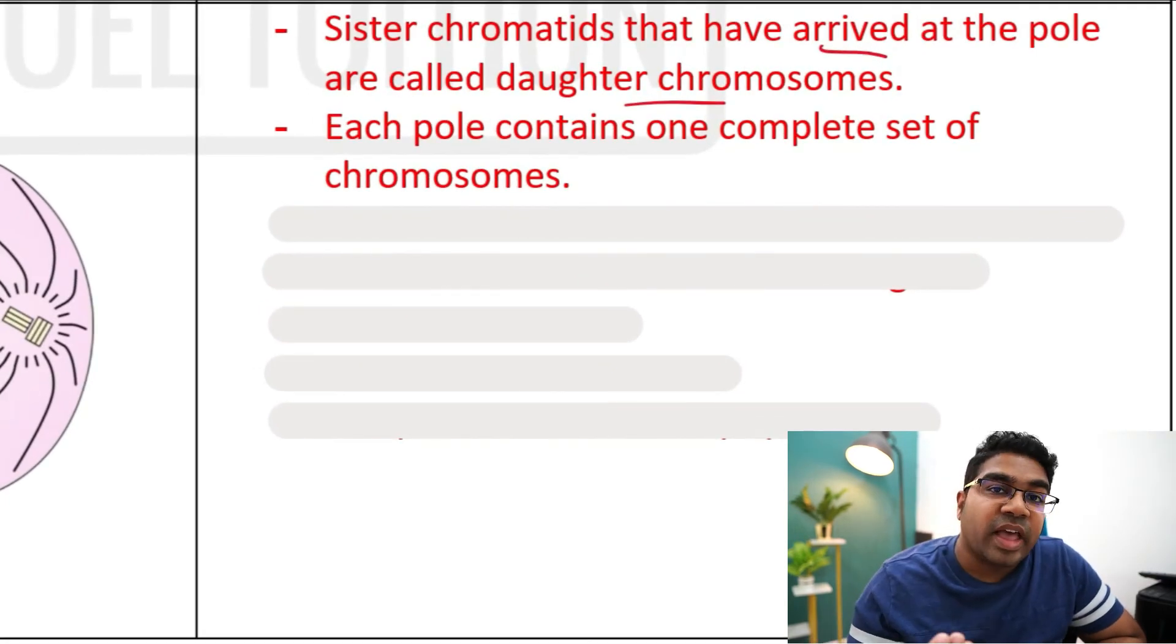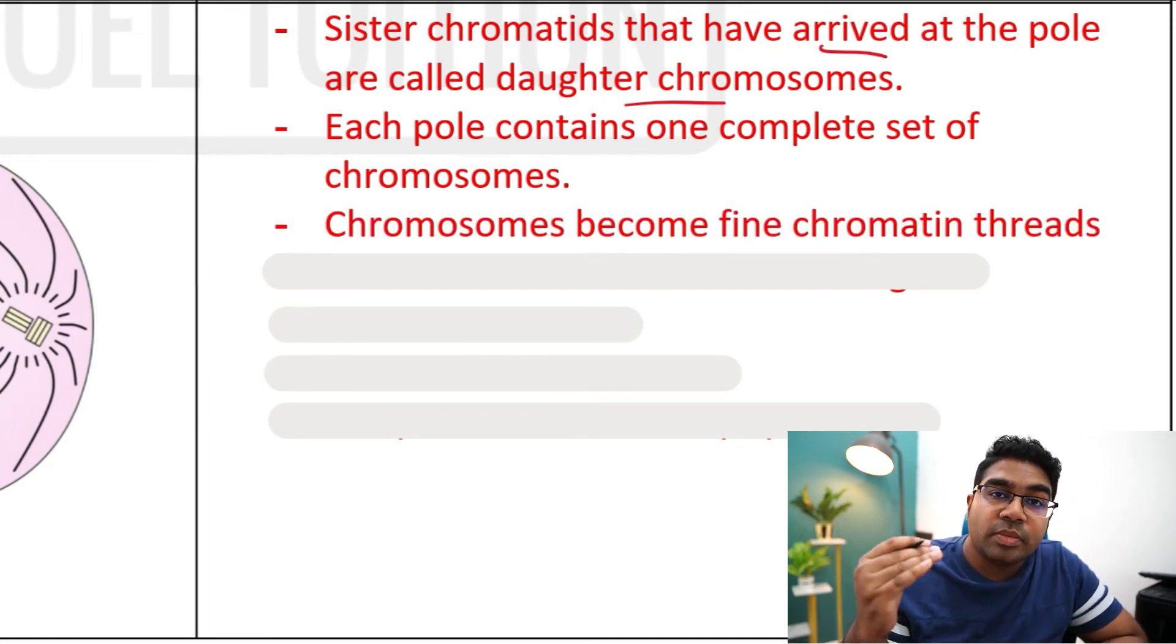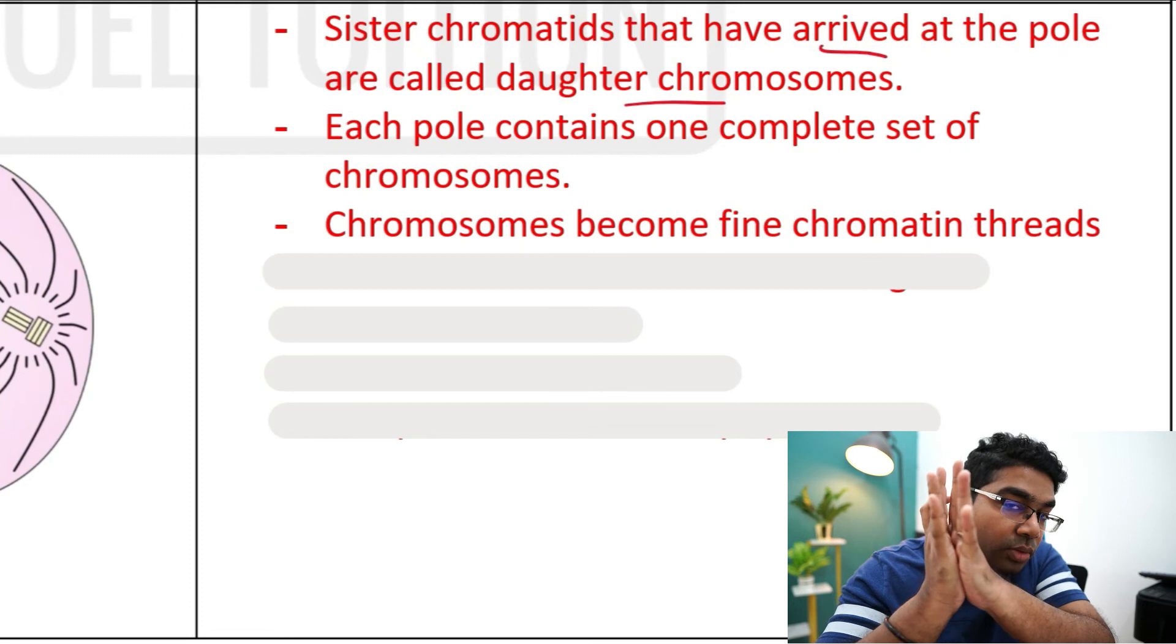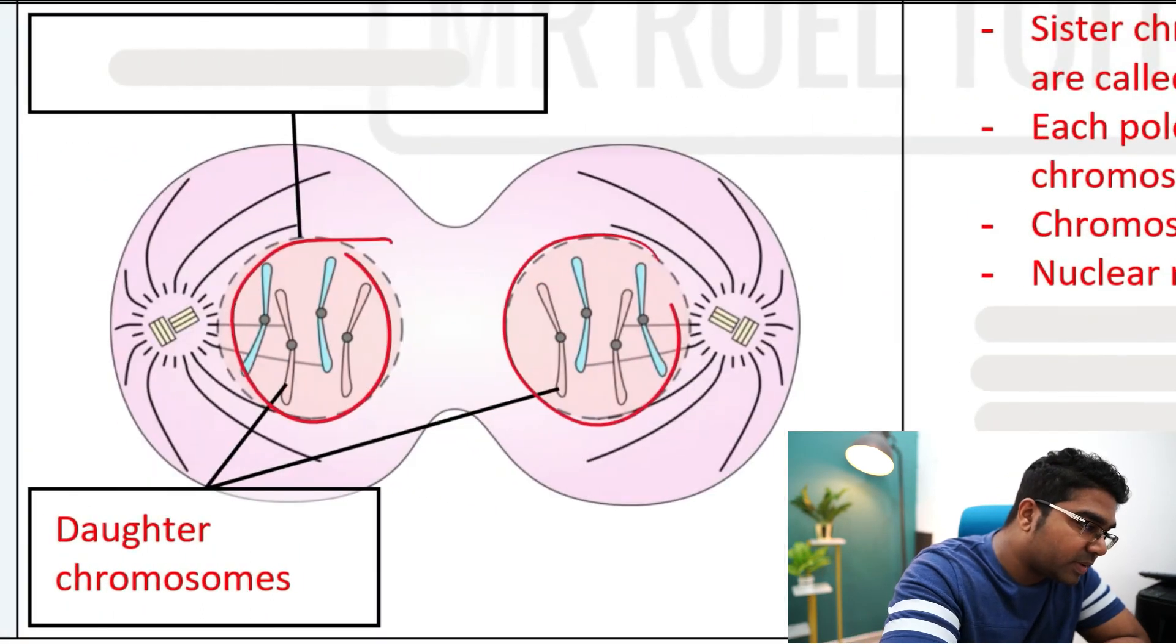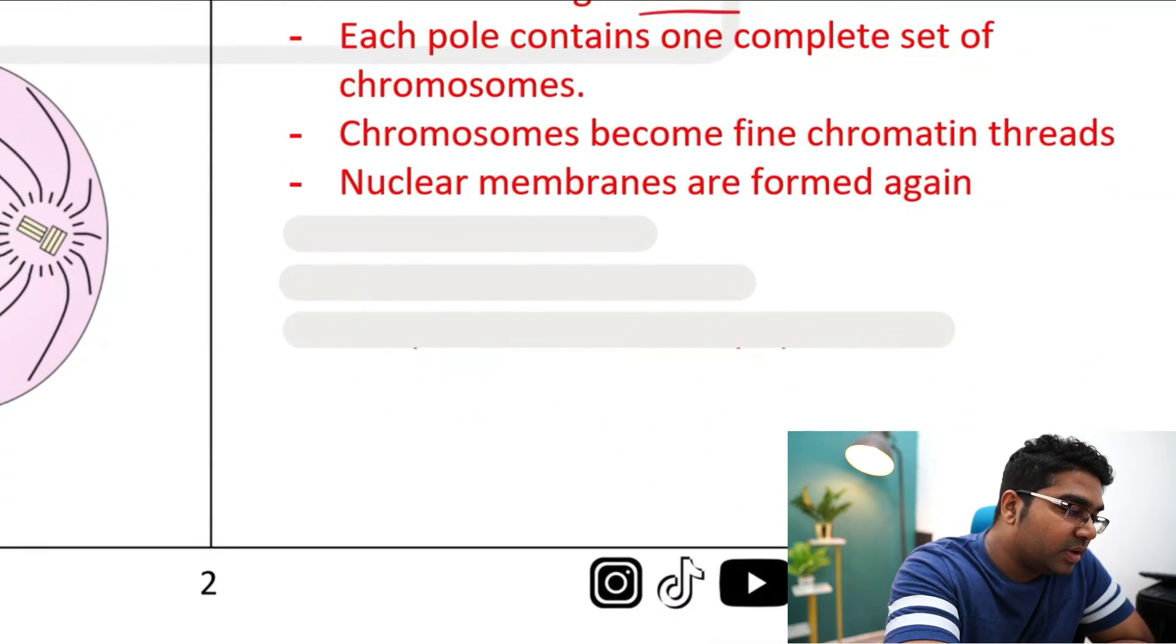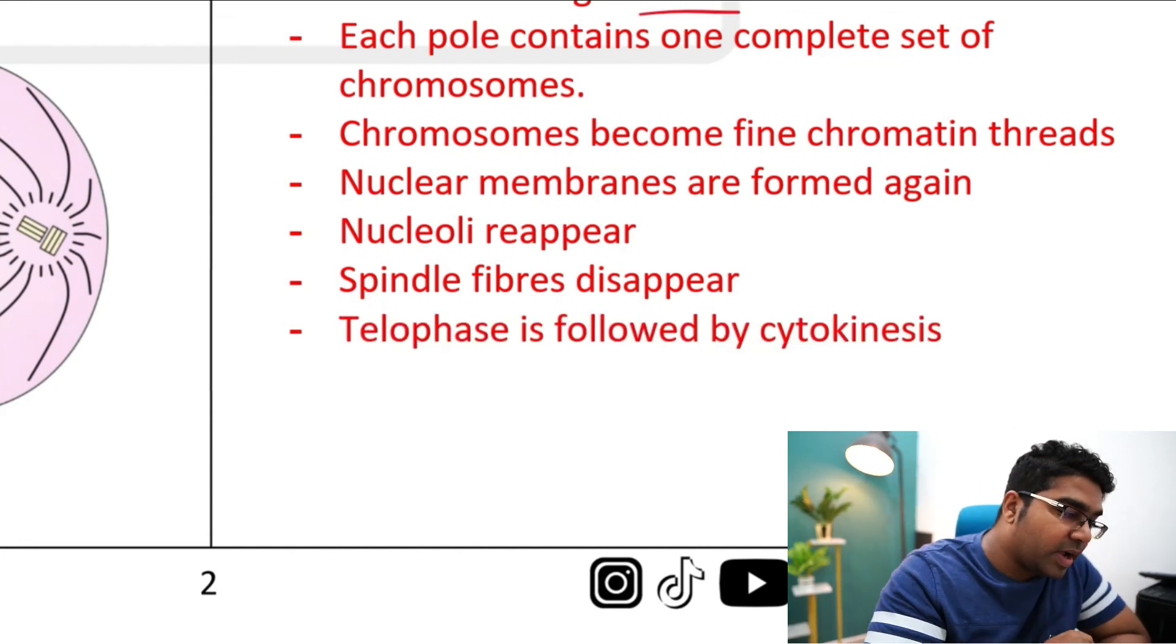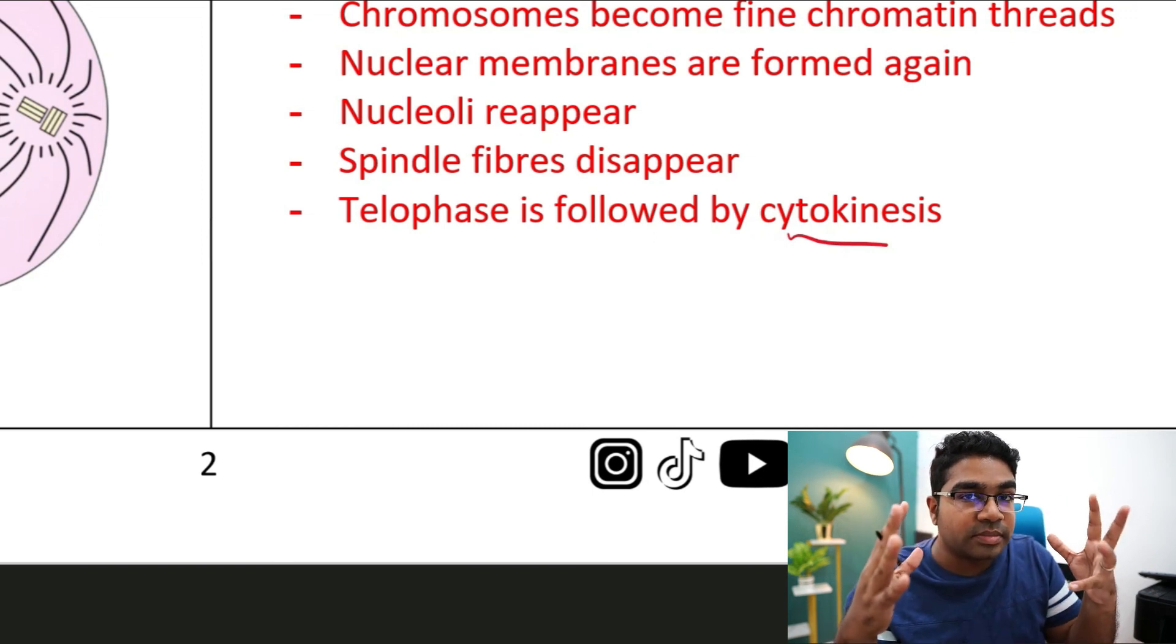Everything that's going to happen after this is actually just the reverse of prophase. The chromosomes now become fine chromatin threads again. Initially the chromatin threads condensed and thickened to become the x-shape, but now they become fine threads again. Next, the nuclear membranes are formed again. As we can see here, we have two new nuclear membranes. In prophase the nucleolus disappeared; now two nucleoli are going to reappear. And then the spindle fibers, which were formed in prophase, are now going to disappear. Finally, telophase is followed by cytokinesis, which is the division of the cytoplasm, but that's for another video.